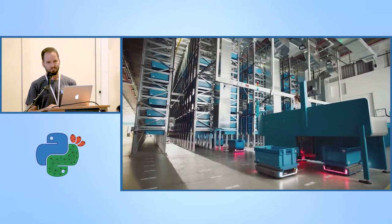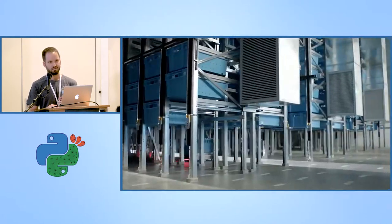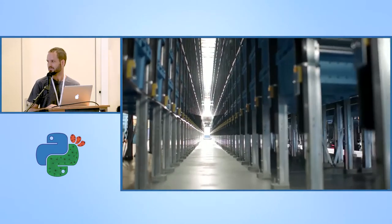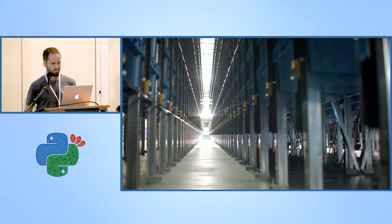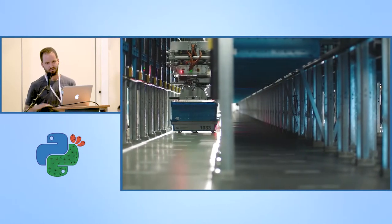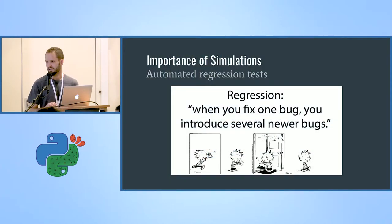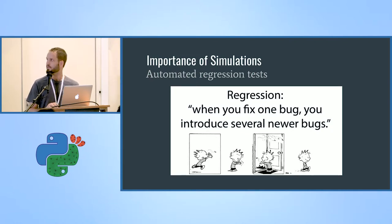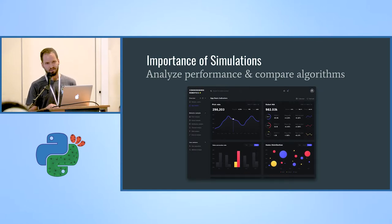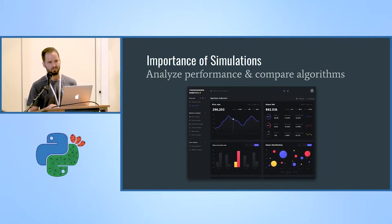When I say simulation, I mean running our system as it runs in production, but instead of communicating with real robots, it communicates with virtual or simulated robots. So it's not only a simulator — it's also a testing tool for us. The simulation has a lot of usages. The first one is that we use it as an automated regression test in the CI. We can also use it to analyze the performance of the system and compare different algorithms and implementations.